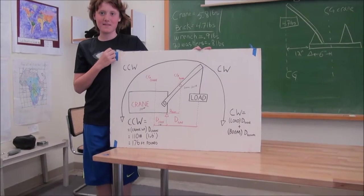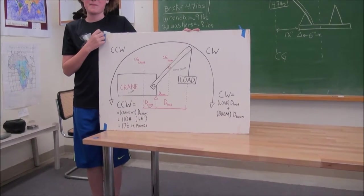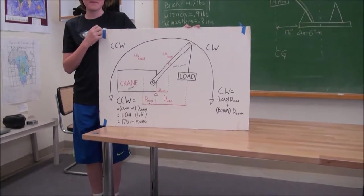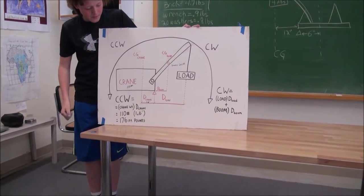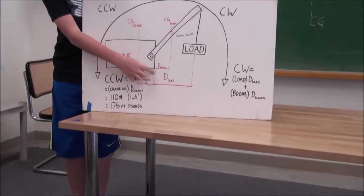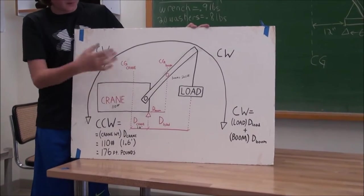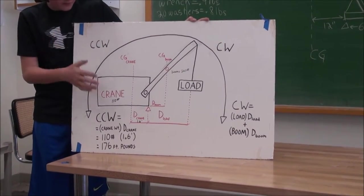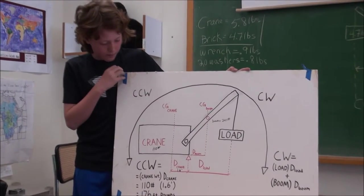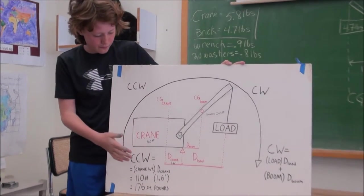Just like we had the seesaw before, the crane is like a seesaw. The pivot point of the crane is right here. To figure out whether the load is going to be off balance or if the crane is going to be able to hold the load, we're going to find each half of the equation, how many foot pounds it is.